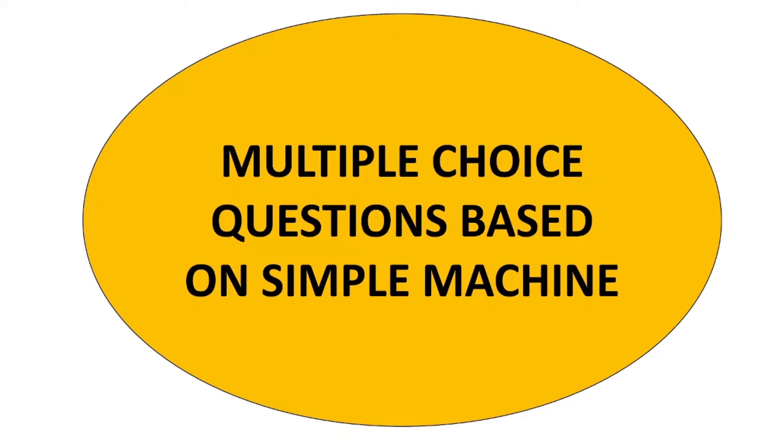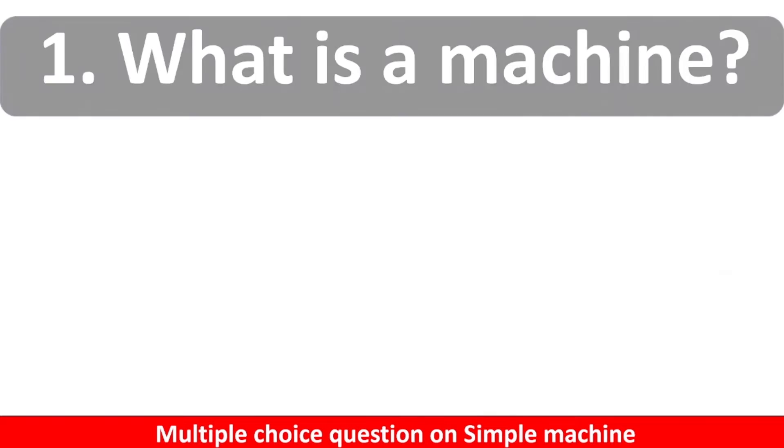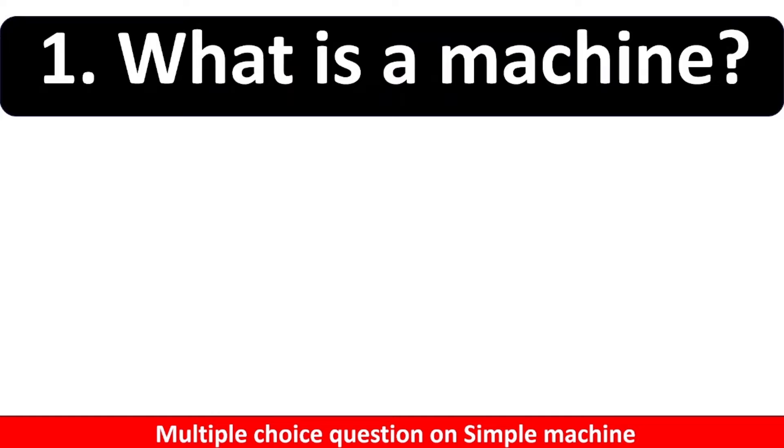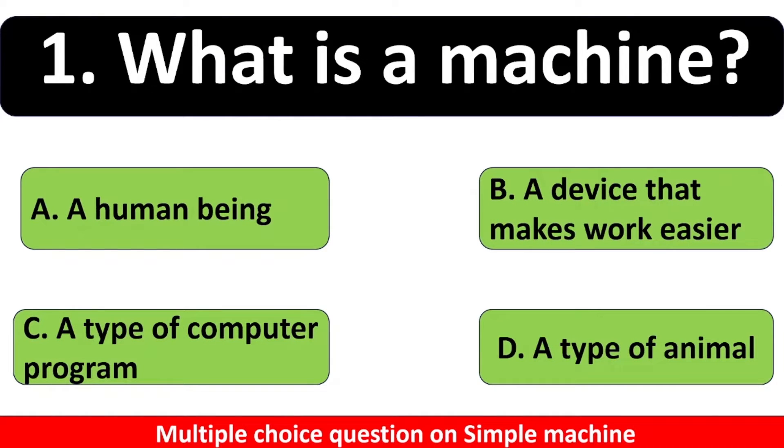Best on simple machine. What is a machine? And the options are: A. A human being, B. A device that makes work easier, C. A type of computer program, or D. A type of animal. Your time starts now.